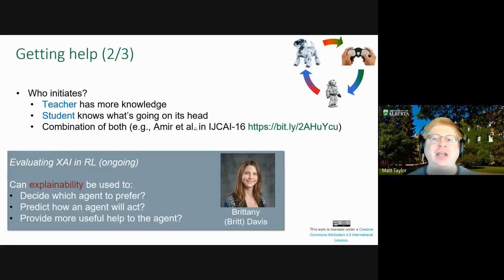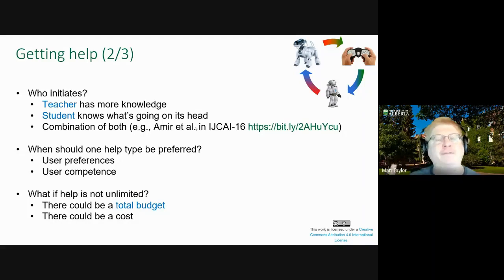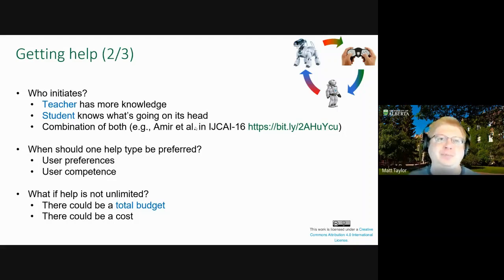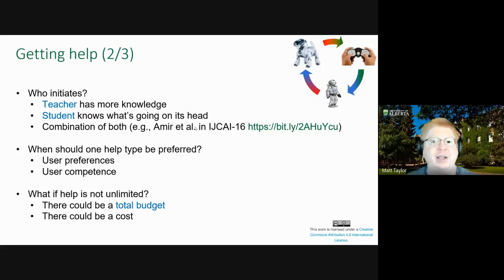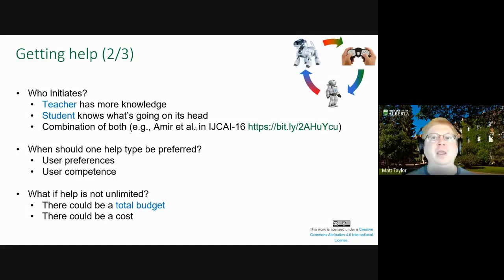My master's student Britt is looking at whether making the student agent more explainable helps a human interact with or provide advice to that agent. We can also think about when one type of help is preferred — I could play Atari and give a good demonstration, but I could not fly a helicopter. However, if I'm watching a simulated helicopter crash, I can say that was bad; if it's hovering well, I can say that was good. Similarly, if Atari were running at 120 frames per second instead of 30, I probably couldn't give a good demonstration, but I could still say 'that was good' or 'that was better than that.'